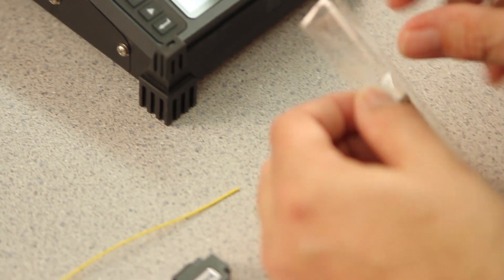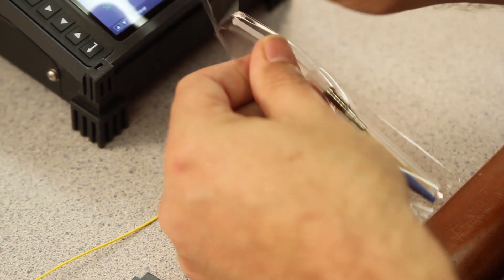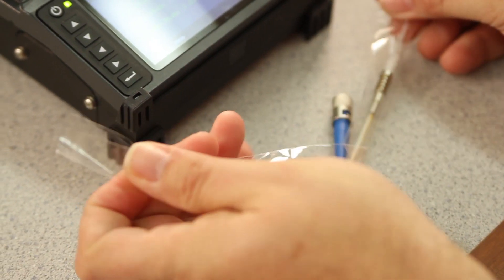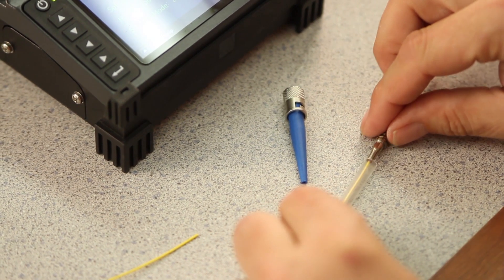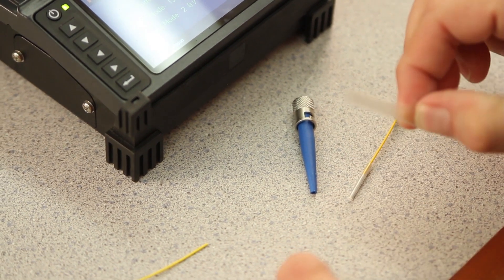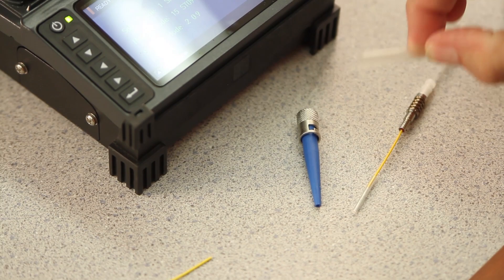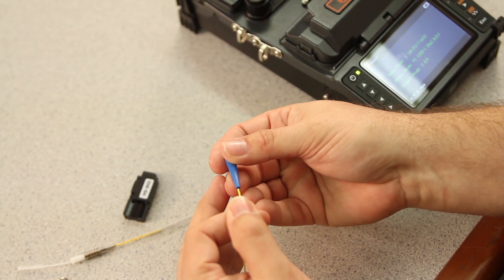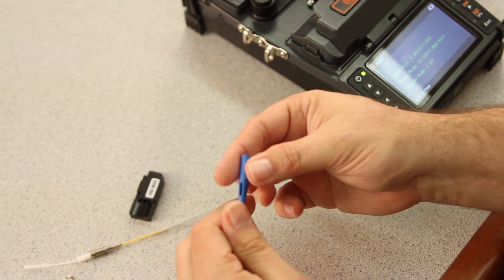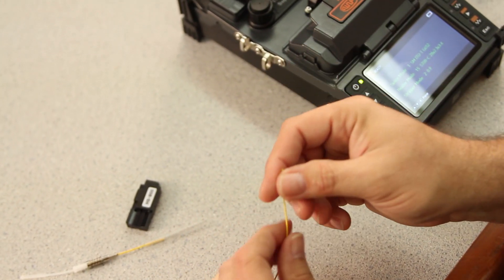Then, open your connector. Remove your large tube. This is just a protector, it's trash. Take your back boot and place it on your 900 micron fiber.